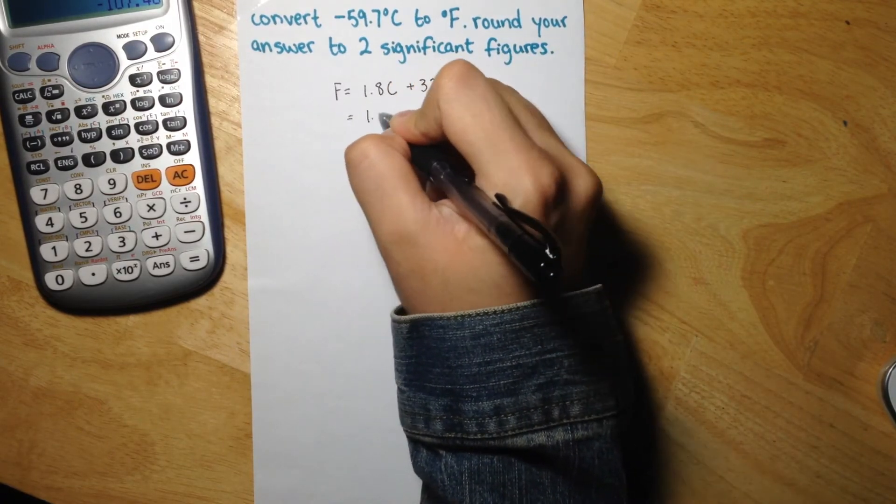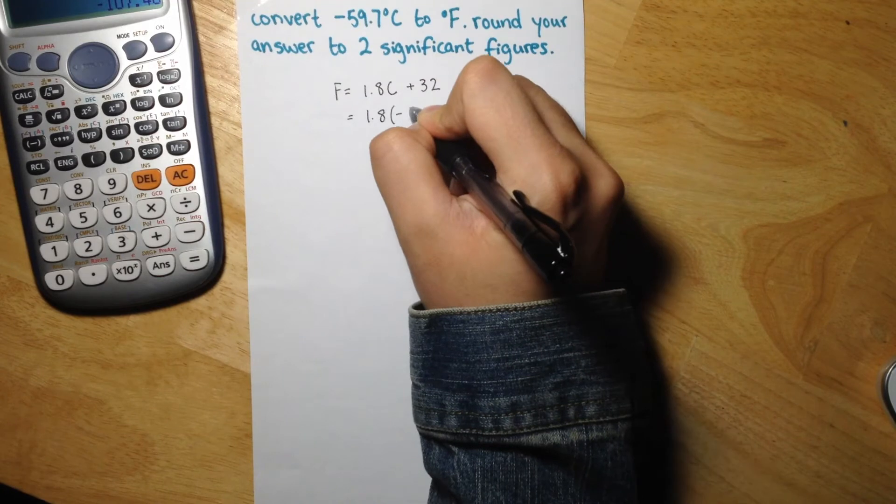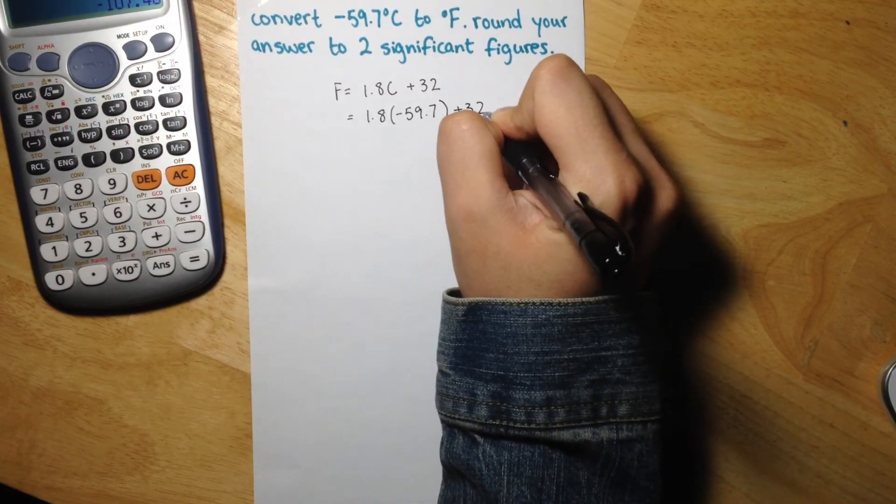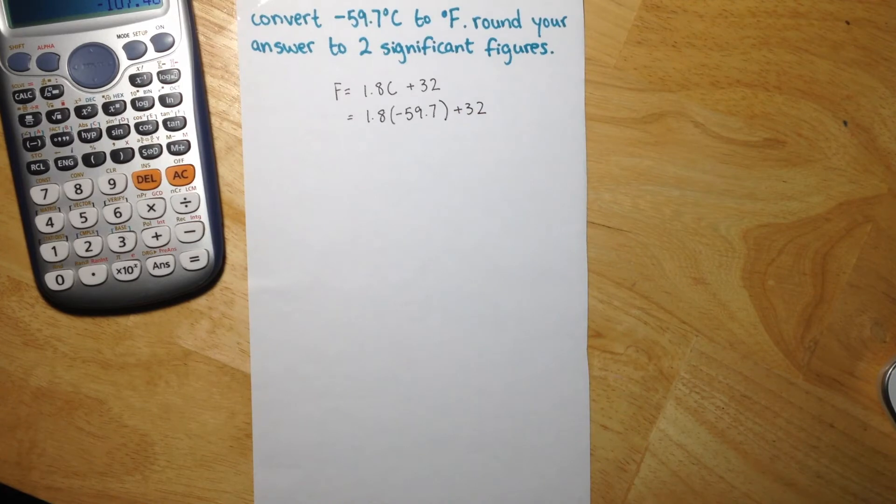So we get 1.8 times negative 59.7 plus 32. So 1.8 times negative 59.7 is negative 107.46.